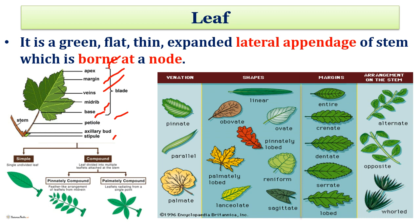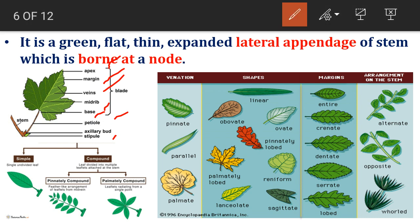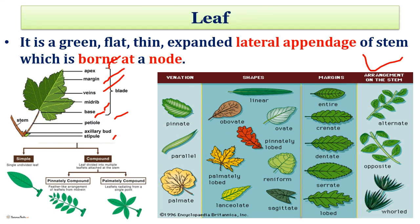A very important morphological character is the arrangement of leaves on the stem, which is called phyllotaxy. A few important types are alternate, opposite and whorled. There are again subtypes to these, but here we are looking at them very briefly.